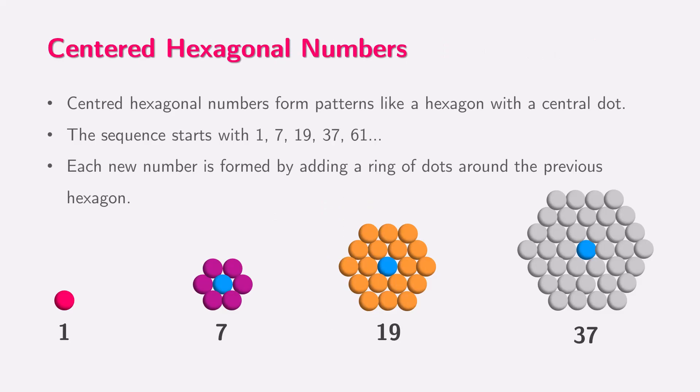Did you know that when you add centered hexagonal numbers, you get cube numbers? Let's see how that works. The first few centered hexagonal numbers are 1, 7, 19, 37, and so on. When we add these hexagonal numbers together, something surprising happens. They add up to cube numbers.